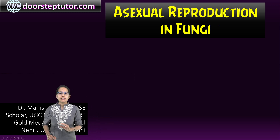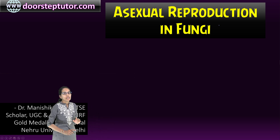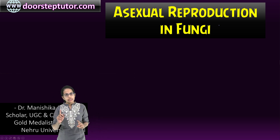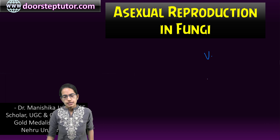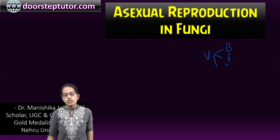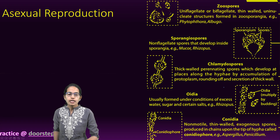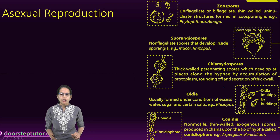As discussed in our previous class, in fungi reproduction can take place in three forms: vegetative reproduction, which could be in the form of budding, fragmentation, and fission; asexual reproduction; and sexual reproduction. In this lecture we would focus on asexual reproduction.